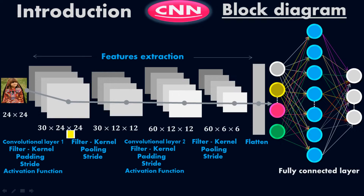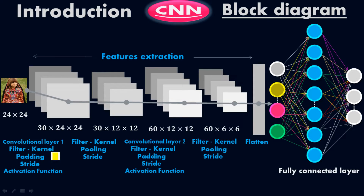In this first convolutional layer, we do the padding and stride process to reduce the dimension. I'm not talking about reducing the number — I'm talking about reducing the dimension. From 24 by 24 it can become 12 by 12 or 6 by 6. If you reduce the dimension of the image it will be easier to process, less memory consumption, and less time consumption. The more dimensions an image has, the more complicated and expensive the process.